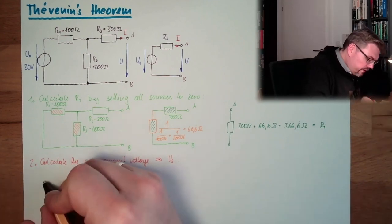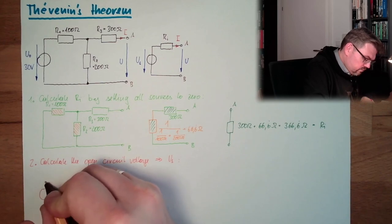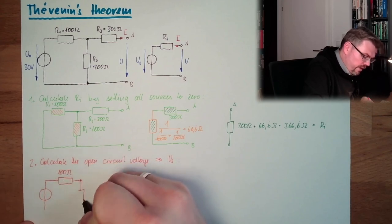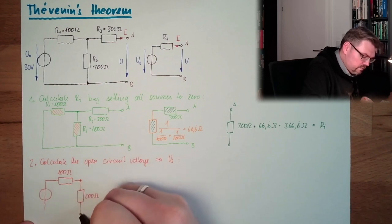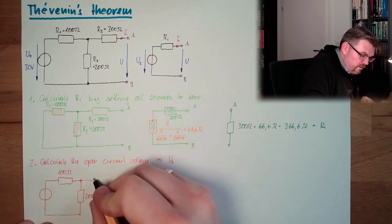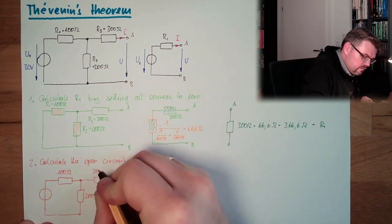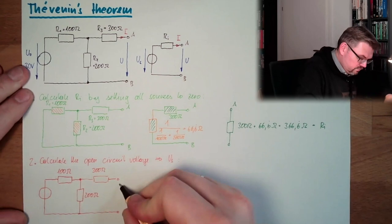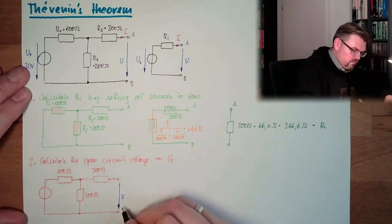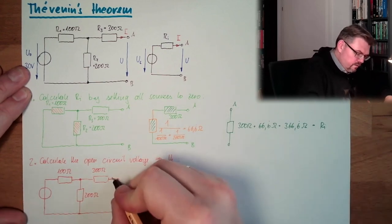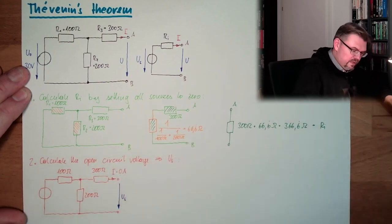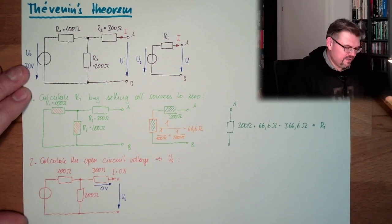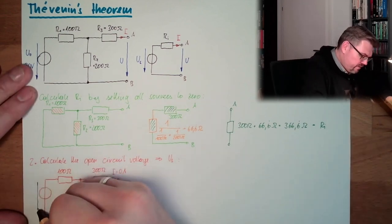Let's draw the open circuit voltage. We have 100 ohms, 200 ohms, 300 ohms, and the open circuit voltage. Here we have zero amps, which means zero volts across R3, so R3 does not count. We have our 30 volts source.